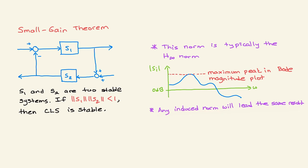Once again, with this feedback interconnection, if this condition holds the closed-loop system is stable. I want to mention that this is a sufficient condition, so the end result can be conservative — it comes with some conservatism.